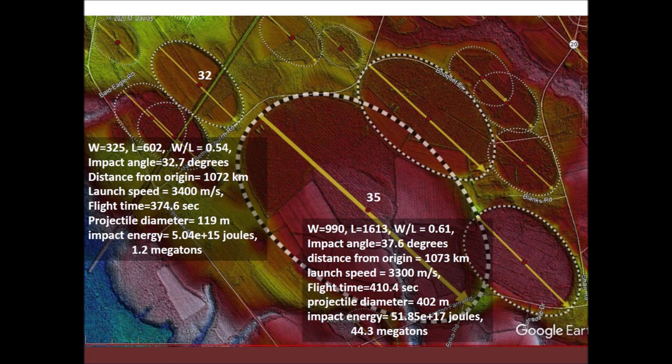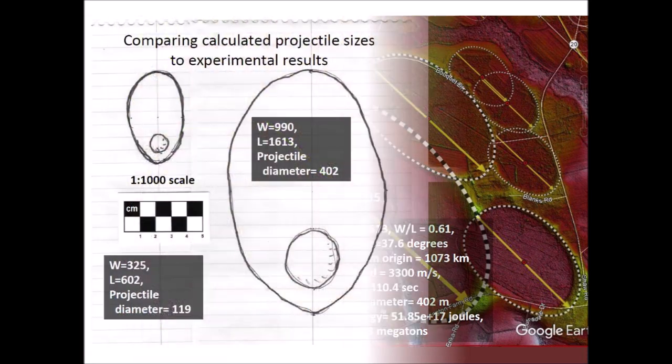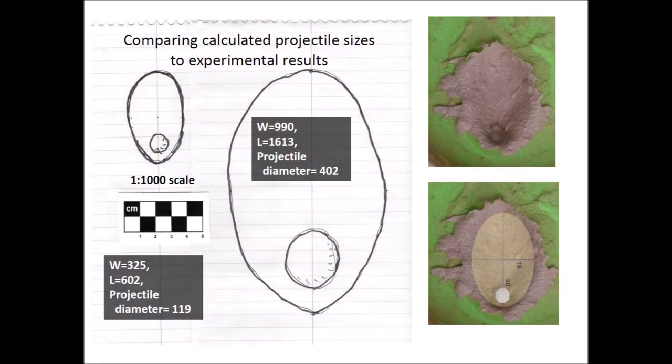By comparison, the most powerful hydrogen bomb ever tested was the Soviet Union's Tsar Bomba with a yield of 50 megatons. It seems logical to conclude that the saturation bombardment by the glacier ice that created the bays killed the megafauna from the east coast to Nebraska. It is always necessary to verify the results of a numerical model — how do we know that the numbers obtained from the calculator are right?